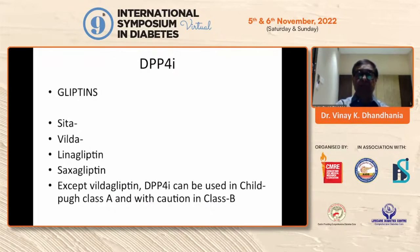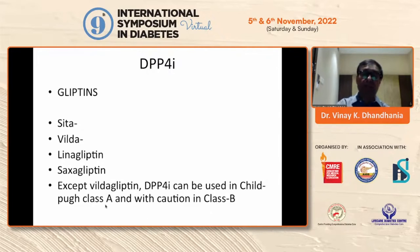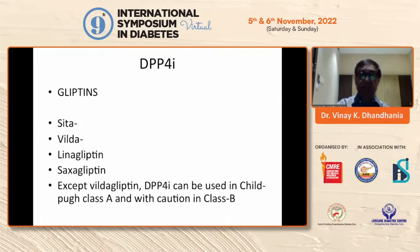DPP-4 inhibitors — the gliptins: sitagliptin, vildagliptin, linagliptin, saxagliptin — are all available, and today we even have evogliptin and teneligliptin. Except vildagliptin, DPP-4 inhibitors can be used in Child-Pugh class A and with caution in class B. Vildagliptin has some hepatotoxicity reported and should definitely not be used in class C. DPP-4 inhibitors can be used in Child-Pugh class A if needed, along with metformin, and a basal insulin can be added if better blood sugar control is needed.